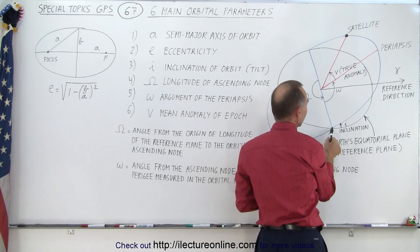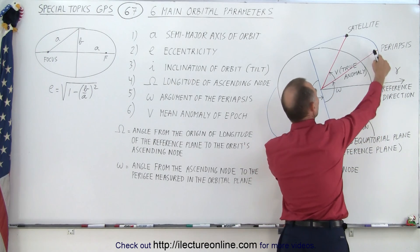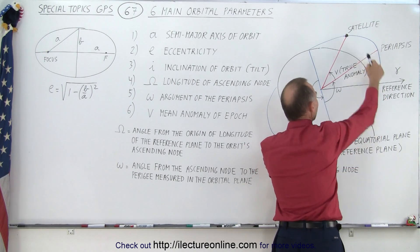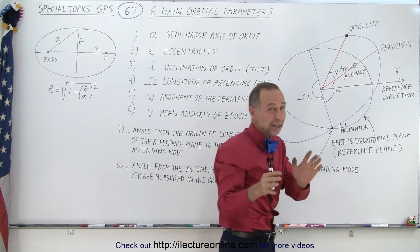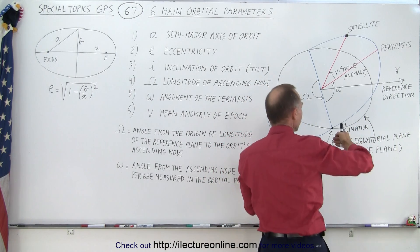and it's the angle from the point where it pokes through the center, to the equatorial plane, to where the periapsis is located. So this angle, now here it shows up as about a 90 degree angle, but of course it could be any angle, depending upon how the orbit is oriented.